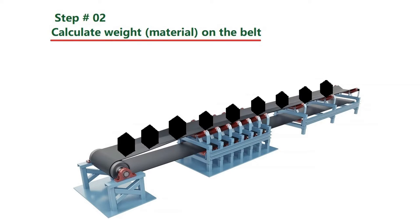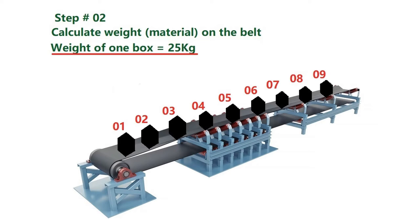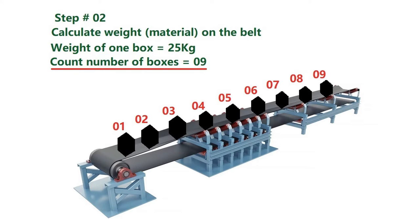Step 2: we will calculate the material on the belt. For example, one box has a weight of 25 kg and we have 9 boxes, so our total material weight will be 225 kg on the belt.